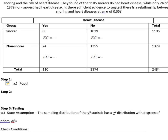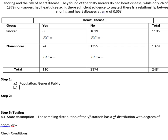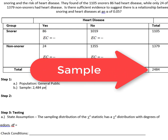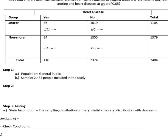In Step 1, we're going to state our population. For this problem, it appears that there is no specific population listed, so our population here will just be the general public. And then our sample is going to be the 2,484 people who were included in this study.